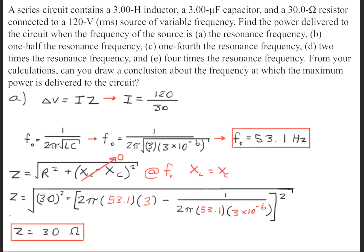Next, we need to find the current, and we'll simply divide the voltage by the impedance. This will give us a current of 4 Amps.